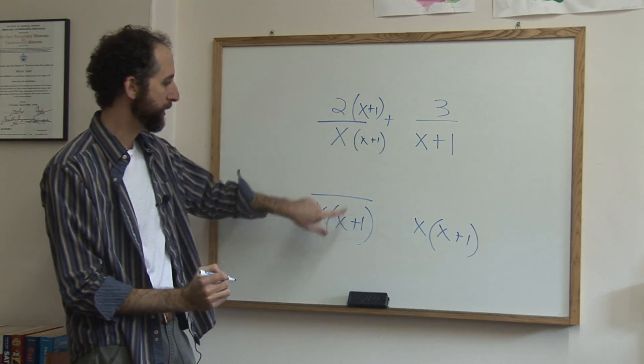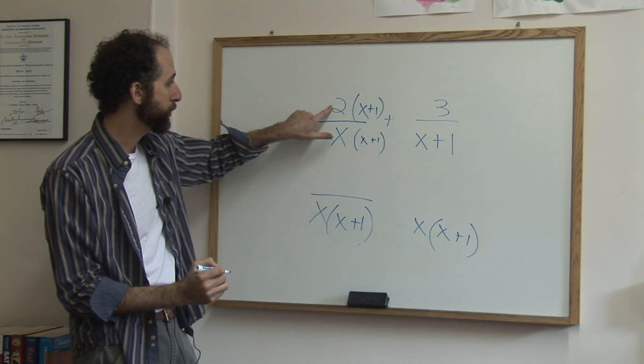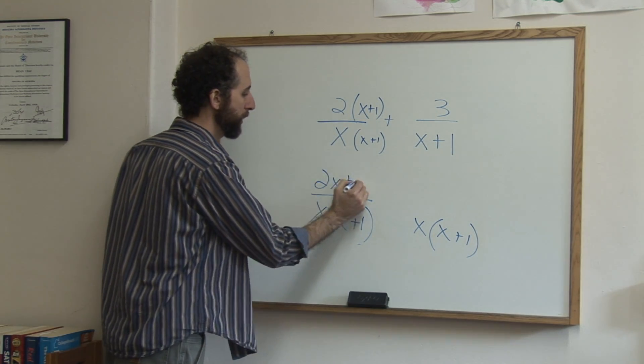So what do I wind up getting? This times that is this, that's why we did it. Two times x plus one is two x plus two. You distribute.